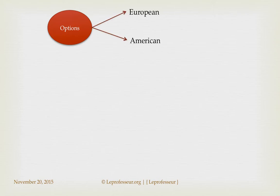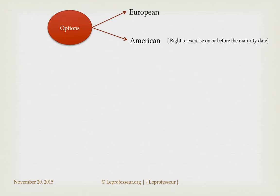Options can be classified as American or European options, and there is a small difference between both. An American option gives the option holder the right to exercise the option on or before the maturity date — so any time up to the maturity date. European options are more restrictive: the option can only be exercised at the maturity date, not before.